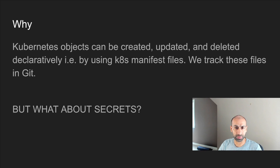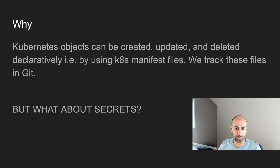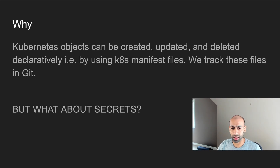The non-sensitive information can just go into ConfigMaps, and the sensitive information we put as secrets. By default, Kubernetes asks us to base64 encode them, but there is no encryption or security added on top of the secrets. So if we check those values into a git repository, anybody could see those values — they would already be shared with all developers.